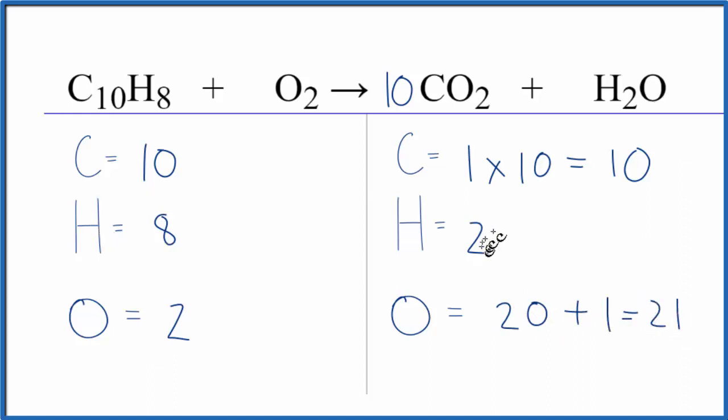Let's update the hydrogens because we could just put a 4 as our coefficient, 2 times 4. That would give us 8. They would be balanced. And then we update our oxygens. For the oxygens, we have 2 times 10. That's 20 plus the 4 times the 1 here,